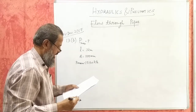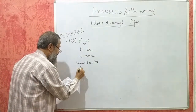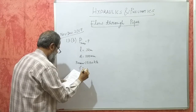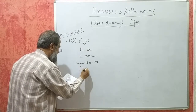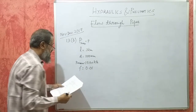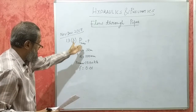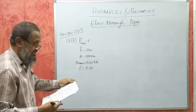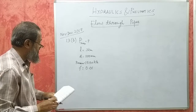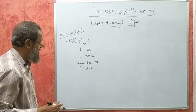The coefficient of friction F is equal to 0.01. This is the given data. With this data, we are asked to find what is the maximum power that can be transmitted.